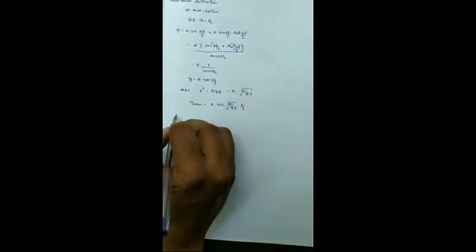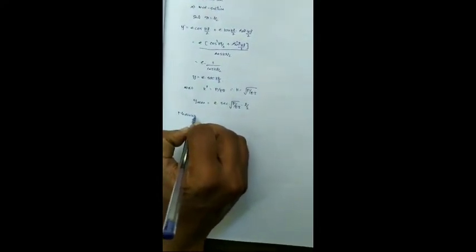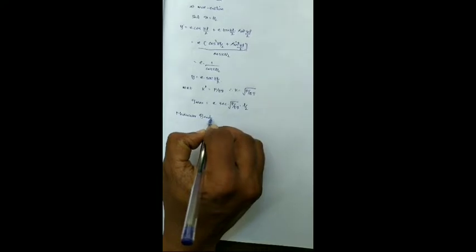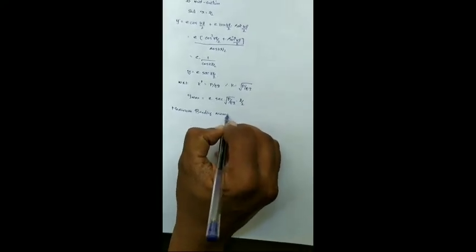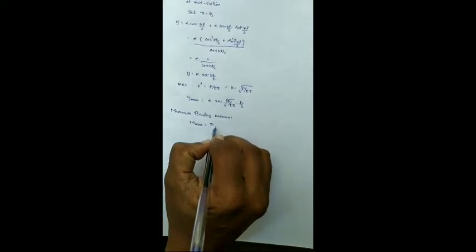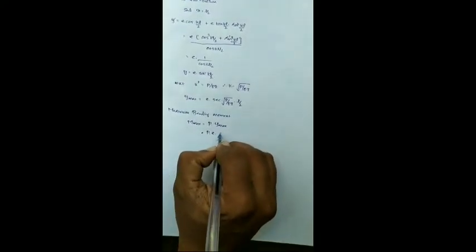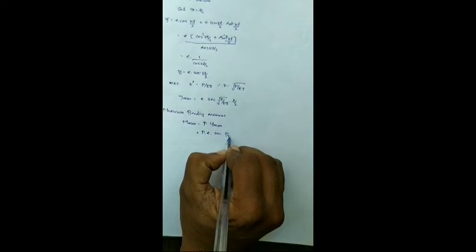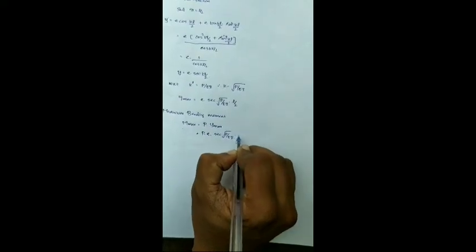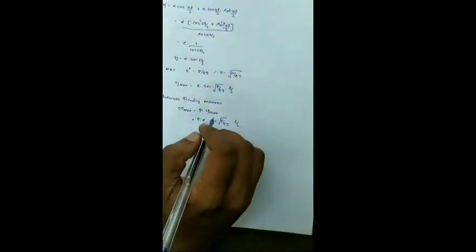Next we are going to find the maximum bending moment. M max is equal to P into y max. Therefore we get P into e into secant root P by EI times L by 2.